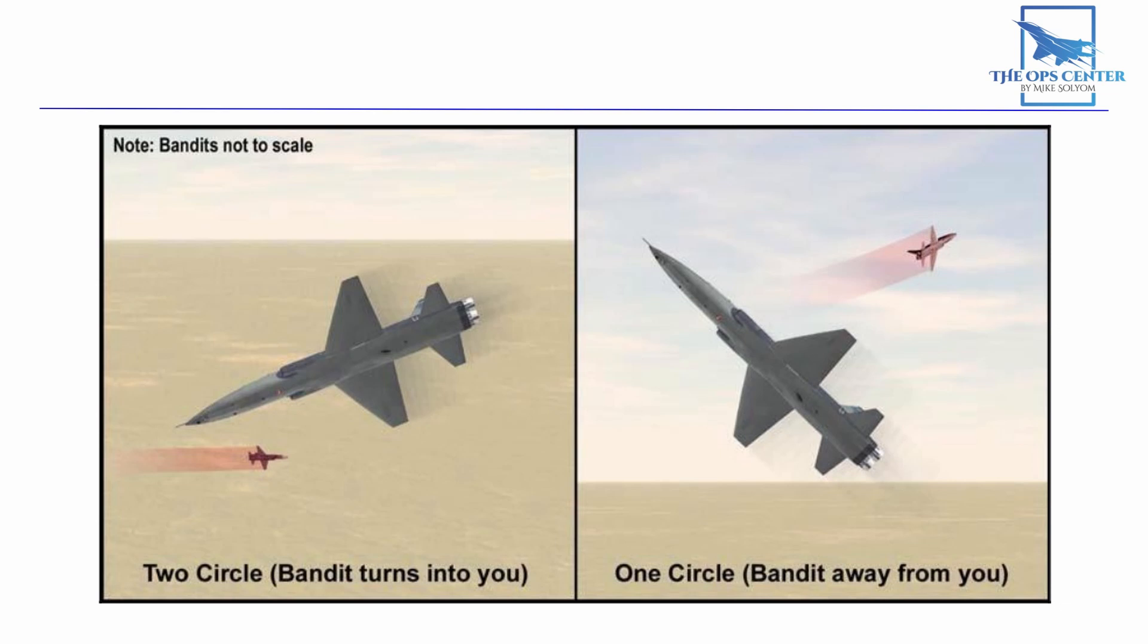This means that if you want to guarantee a two-circle fight, you have to forfeit the benefits of a lead turn. So you need to choose if you want to decide the fight's direction or make a lead turn. You can't have both.